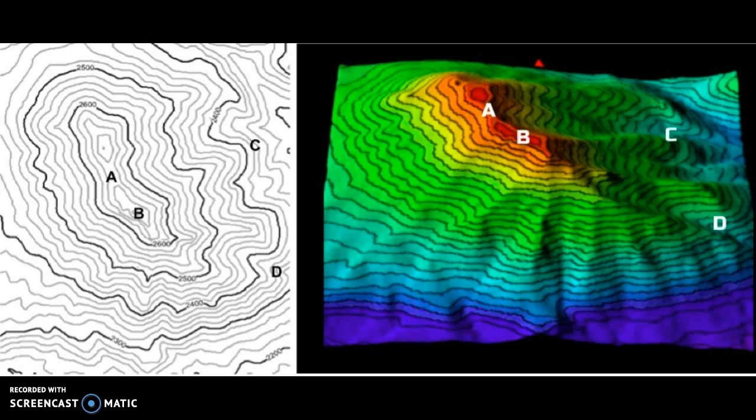Enclosed contour lines represent high points. Therefore, point B has a higher elevation than point A and more gravitational potential energy.